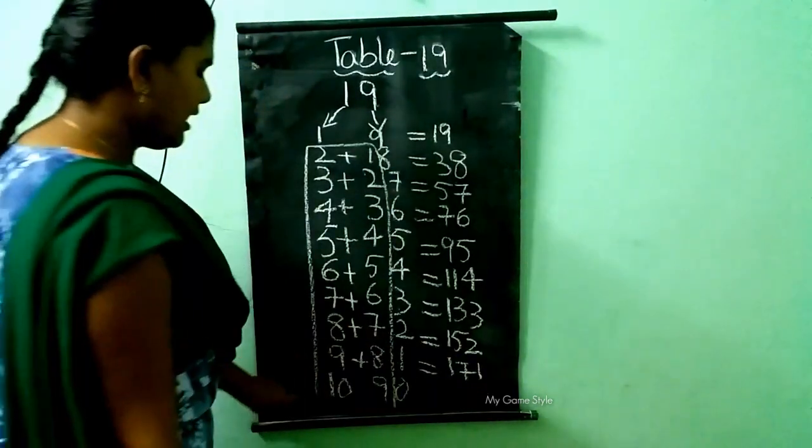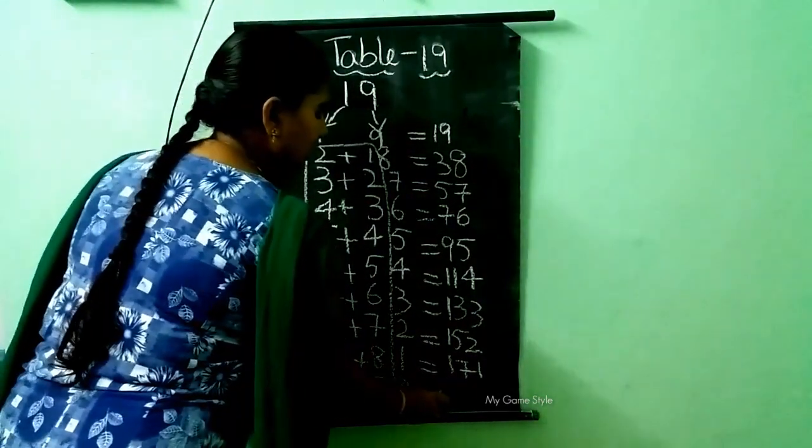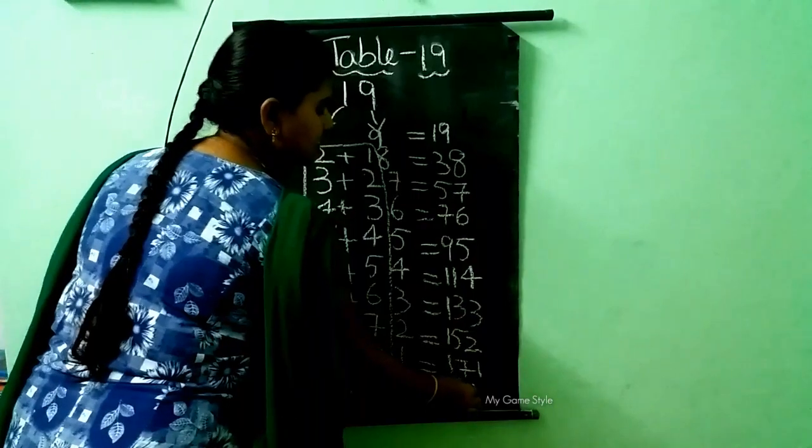Here 1, as it is. Then 10 plus 9. How much, children? 19. Here 0, as it is.